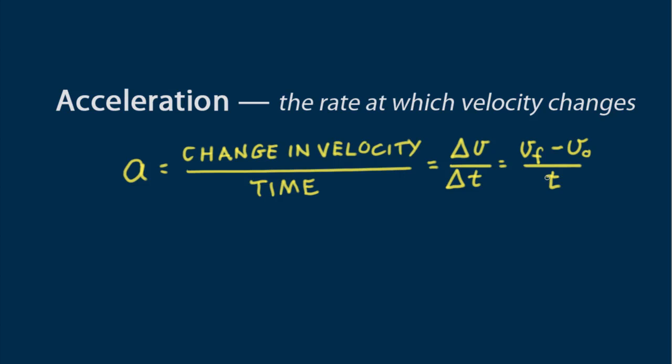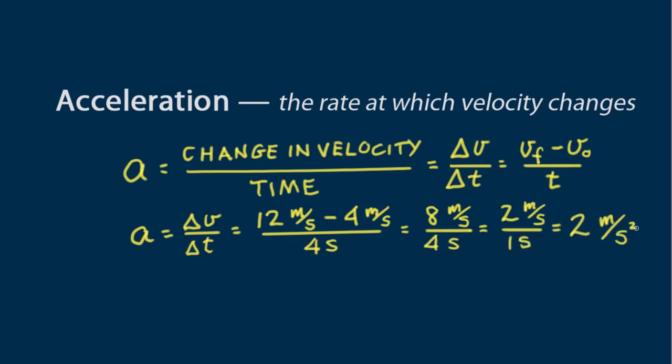For the time being, we consider only constant acceleration, where velocity changes at a steady rate. The standard unit of acceleration is meters per second per second or meters per second squared. As an example, if an object accelerates from 4 meters per second to 12 meters per second in 4 seconds, the acceleration would be A is delta V over delta T. 12 meters per second minus 4 meters per second all over 4 seconds. That's equal to 8 meters per second divided by 4 seconds. We get 2 meters per second over 1 second which is 2 meters per second squared. That's the acceleration. In each second, the velocity changes by 2 meters per second, which is why we say the acceleration is 2 meters per second per second or 2 meters per second squared.